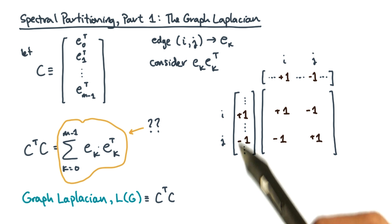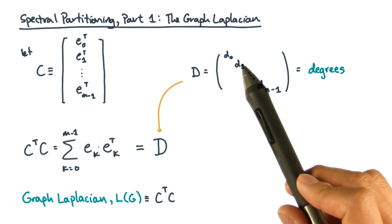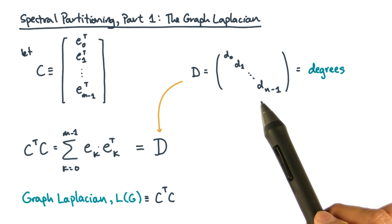Now, this is what one of these products tells us, but what about the sum? Well, let's see. The diagonals count the degree of each vertex. Let's represent that by a diagonal matrix D, where the diagonal entries are the degrees of each vertex. And let's say there are n vertices in all.